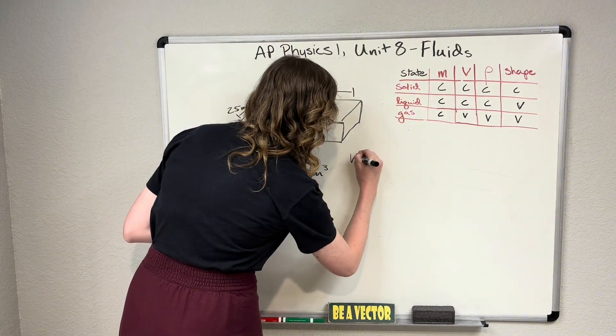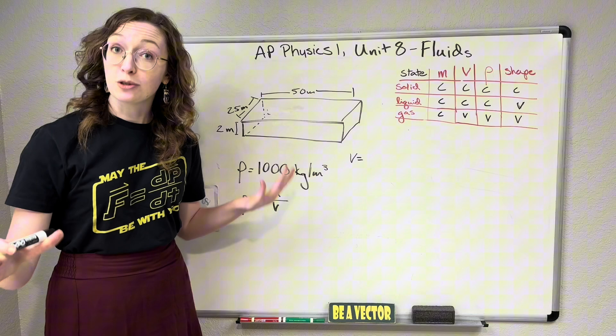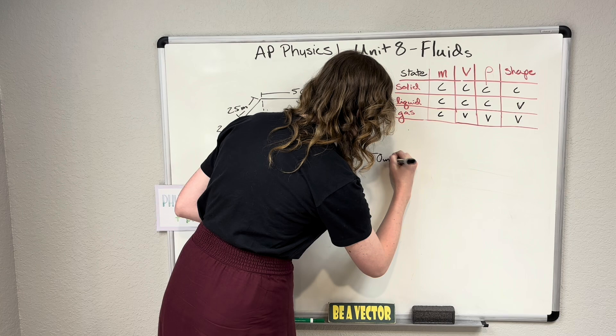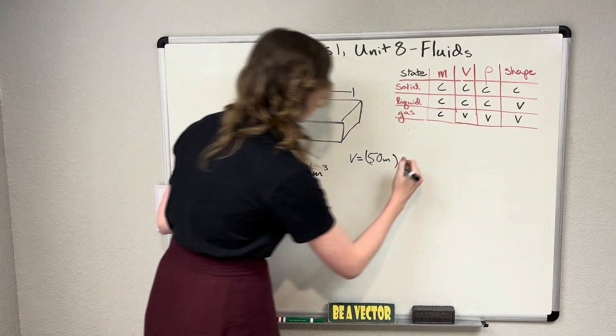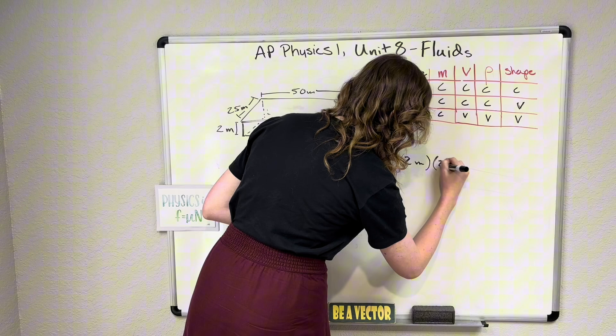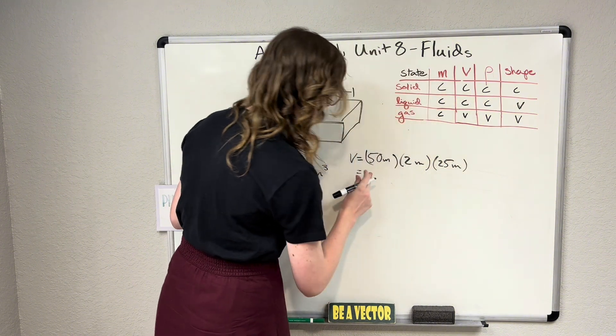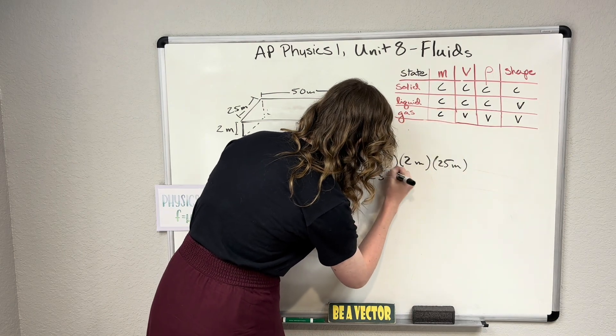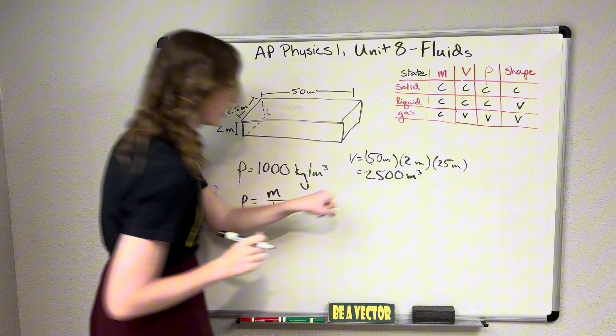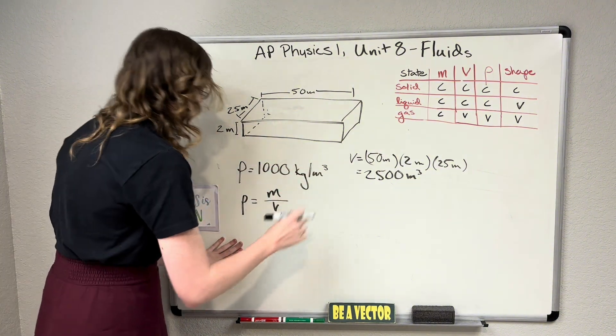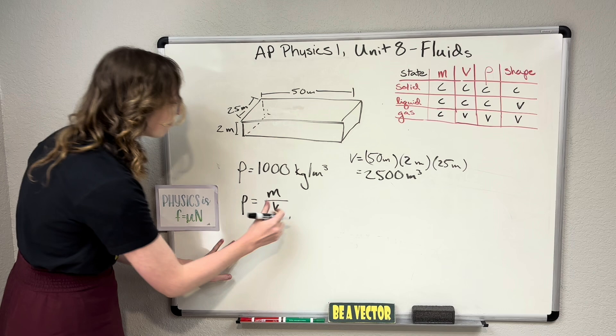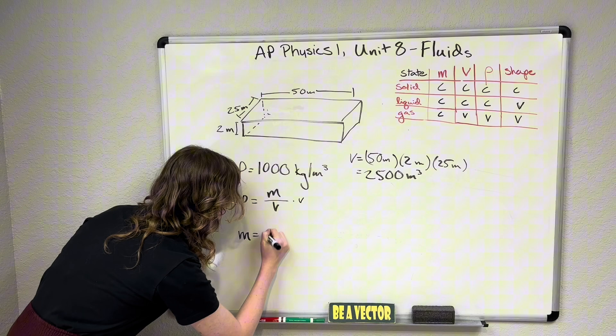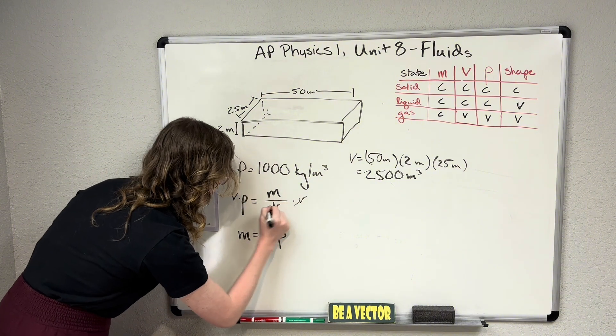We know that volume of a rectangular prism, which we're going to assume this pool is, is length times width times height. So that would just be 50 meters times 2 meters times 25 meters, which would be 50 times 50, which is 2500. Yep. 2500 cubic meters is the volume of our pool. So then, if I'm going to take my little density equation and solve it for mass by multiplying both sides by my volume here. So mass is equal to my volume times my density, like so.